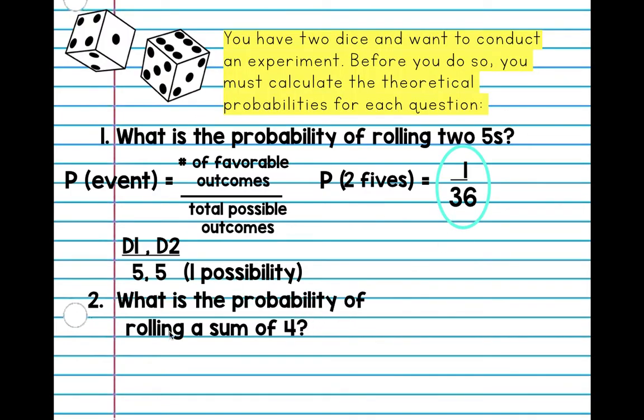What is the probability of rolling a sum of four? So let's look at our fraction. We know our denominator is 36. So what numbers can I add together to get four? Let's look at dice one. Let's start with one because one's always easiest. One plus what equals four? So I can get three.